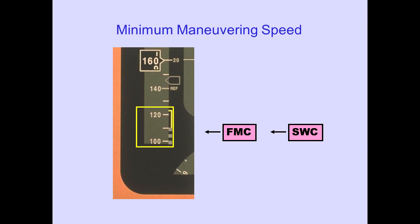Minimum maneuvering speed is displayed as an amber line. This indicates the maneuver margin to stick shaker or low speed buffet in a 20 to 30 degree bank. Minimum maneuvering speed in this example is 123 knots. The stall warning computer through the selected flight management computer provides this information. This margin is defaulted to 1.2 G's per FAA guidelines and 1.3 G's per CAA or JAR guidelines.